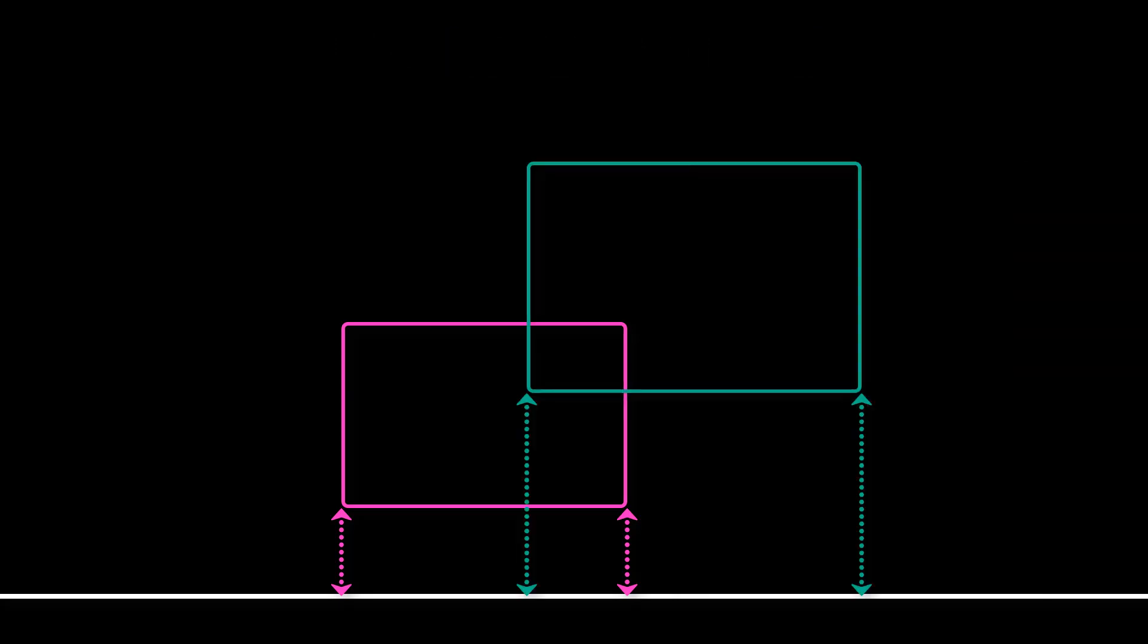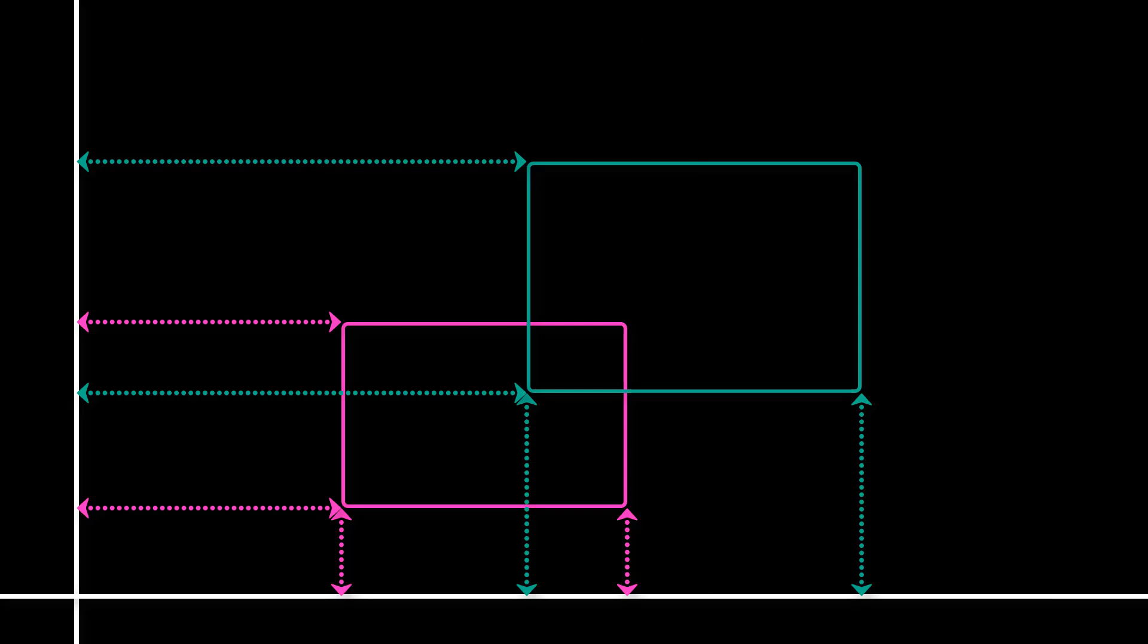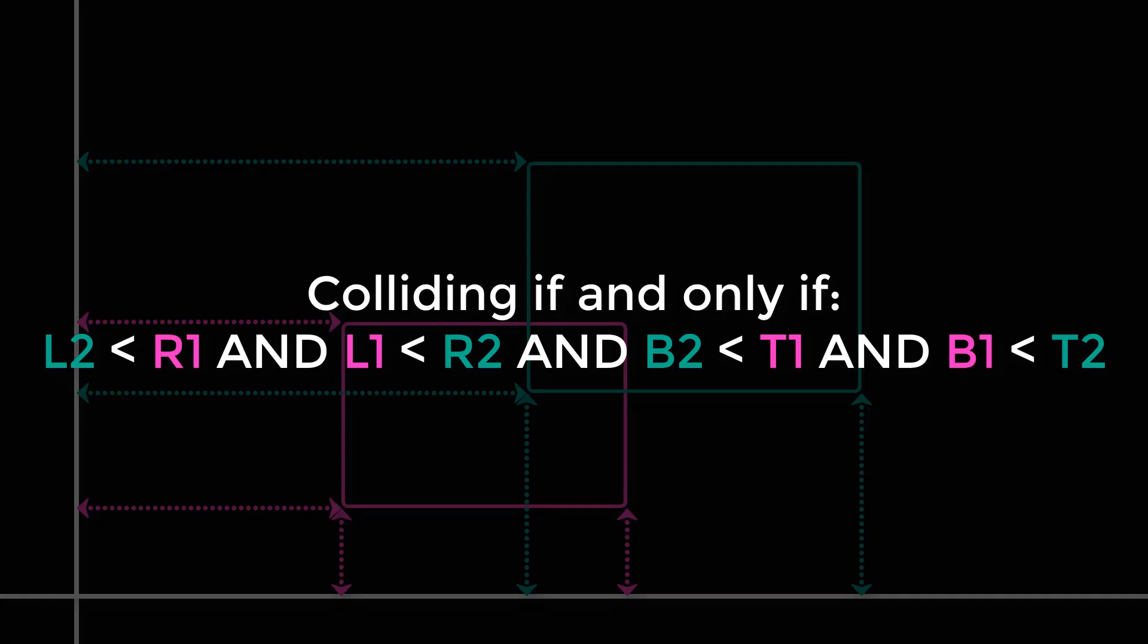So we can repeat this for both axes, and the boxes are colliding if they are colliding in the x-axis, and they are colliding in the y-axis. And here's the conditional formula that you can use, assuming that t1 and t2 are the respective top points of the boxes, and b1 and b2 are the respective bottom points.